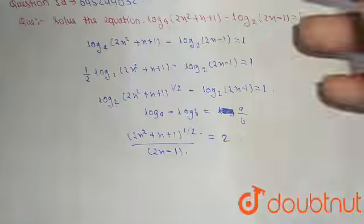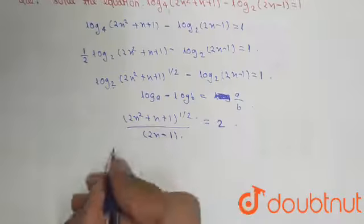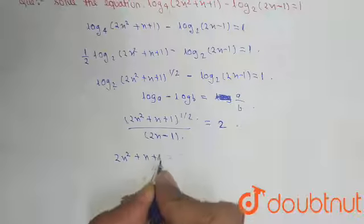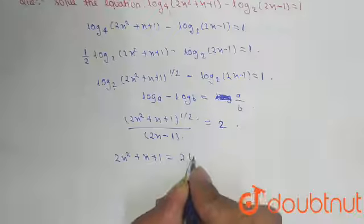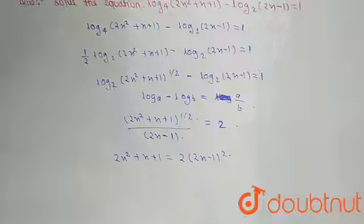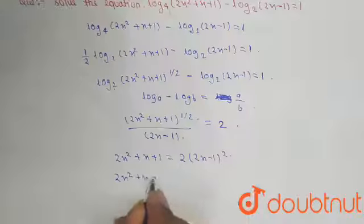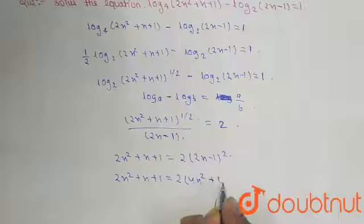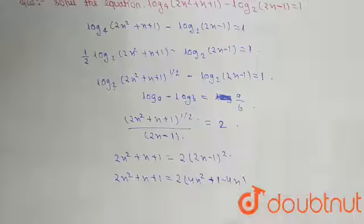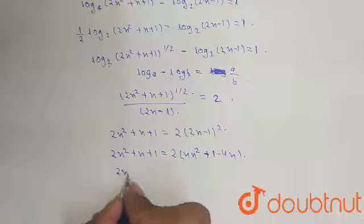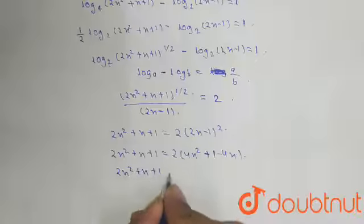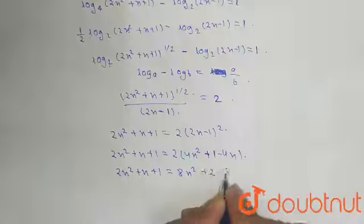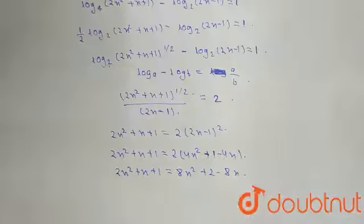Now we have to square both sides. This becomes 2x² + x + 1 equals 2 times (2x - 1)². When we expand, we get 2x² + x + 1 equals 2 times (4x² + 1 - 4x), which gives 2x² + x + 1 equals 8x² + 2 - 8x.